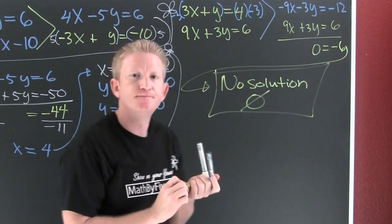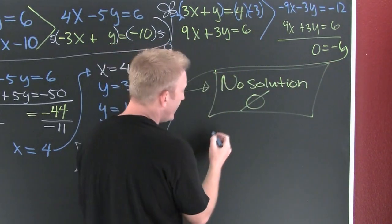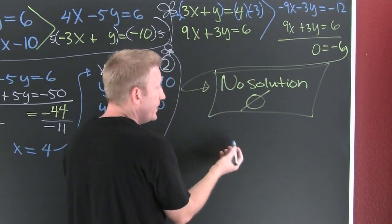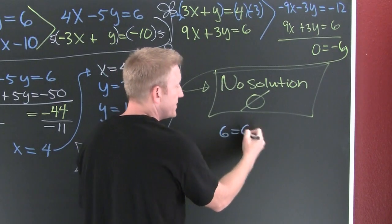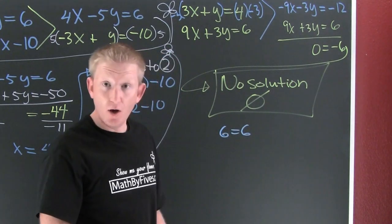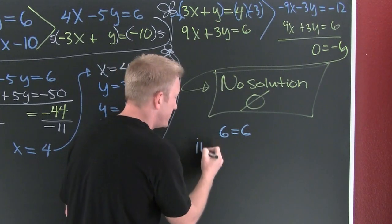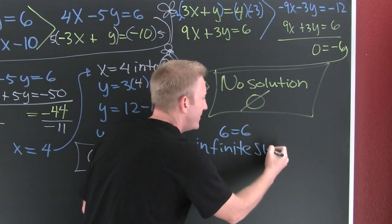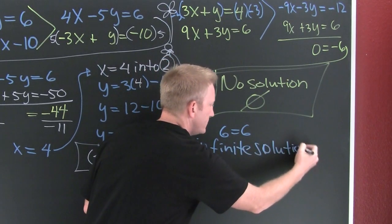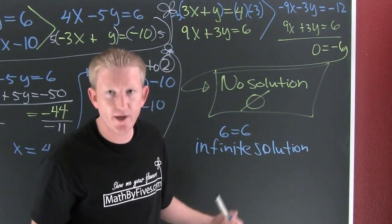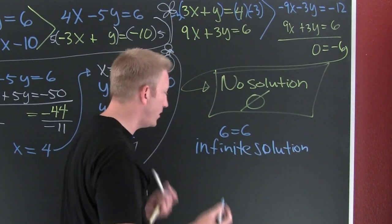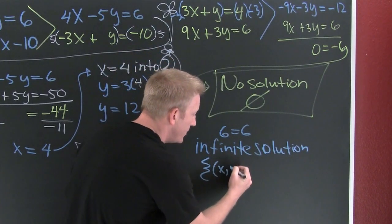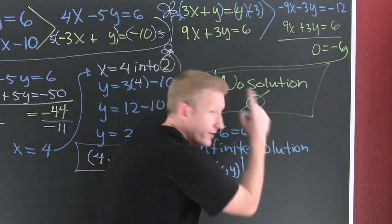What if instead we had solved a different system and gotten something like 6 equals 6? Is that ever not true? No — it's always true! And that would give us infinite solutions. Depending on your original equation, that's how you'd write your point — probably in set notation: the set of points (x, y) where y satisfies one of the original equations.